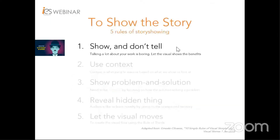In the topic of how to show the story, there are five rules of story showing. Number one: show and don't tell. Unlike storytelling, showing a story is about telling a story with visuals, minimal narrative, and no motion. It is different from reading a book or watching a movie, but it is like admiring the mystic smile of Mona Lisa. We do not let the words bore us, but we let the visual show the message or the benefit.